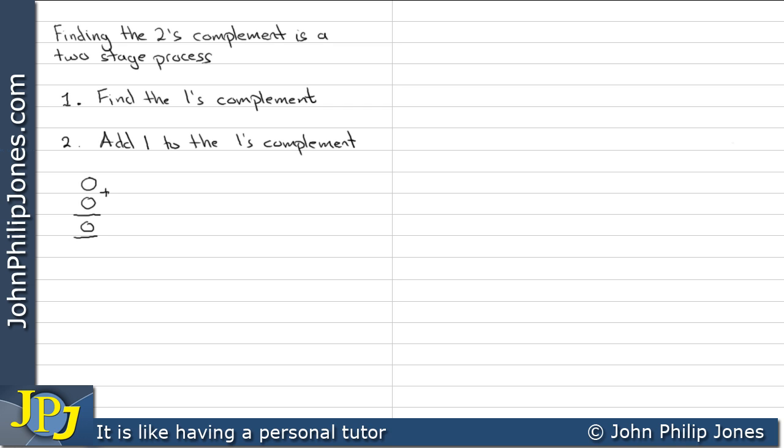A 0 plus a 0, well, that's a 0. If I have a 0 and I add that to a 1, then I get a 1. If I have a 1 and I add that to a 0, it's the same thing, we get a 1.